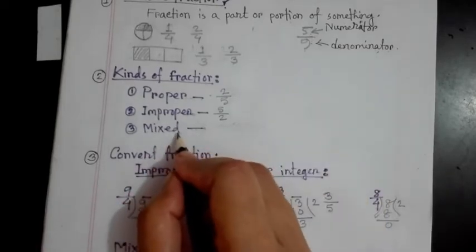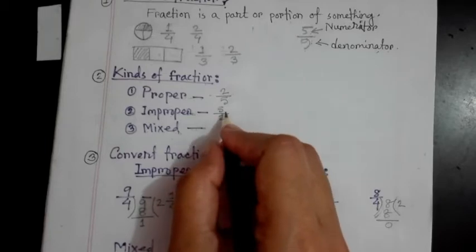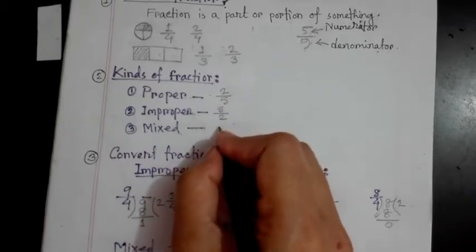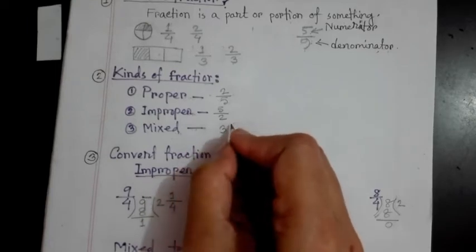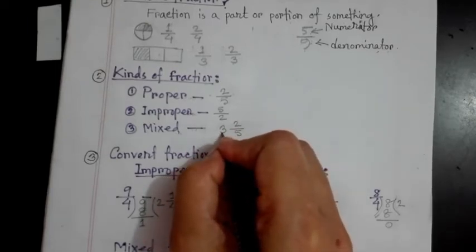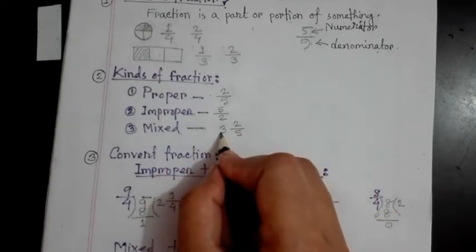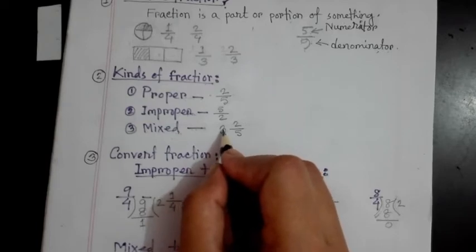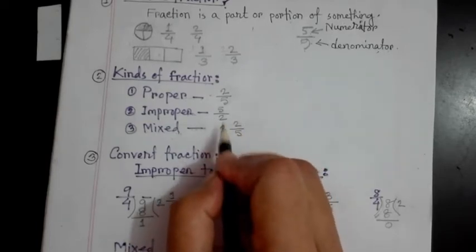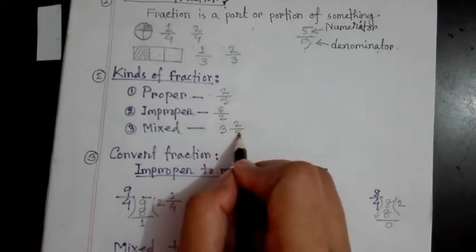Now what is a mixed fraction? A mixed fraction is made with an integer and a proper fraction. If I write here 3 whole 2 by 5 — this 3 is an integer, also called a whole number. So 3 whole 2 by 5 is a mixed fraction. If an integer and a proper fraction are written together in this way, then we know it is a mixed fraction. Now I think you can easily identify proper, improper, and mixed fractions.